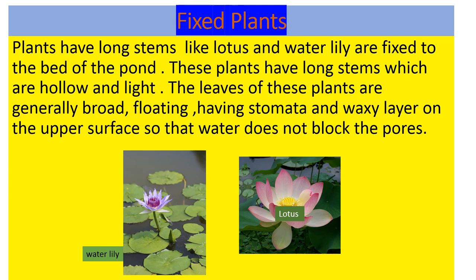These plants have long stems which are hollow and light. The leaves of these plants are generally broad and floating, having stomata and a waxy layer on the upper surface so that water does not block the pores.